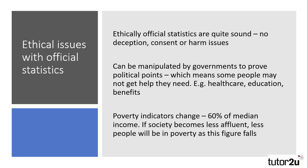One example of this is the measurement of poverty in the UK. If people earn less than 60% of the national median wage, they are considered to be in poverty. If the median wage is £25,000 a year, that means that anybody earning less than £15,000 would be in poverty. However, if the median wage drops to say £20,000 a year, that would mean those earning under £12,000 would be in poverty. So, despite society getting less affluent, the definition of poverty for official statistics would have fewer people in poverty, as those earning between £12,000 and £15,000 would no longer be seen as poor. This highlights an issue with the definition used in official statistics and how it might negatively impact those that need the most support.